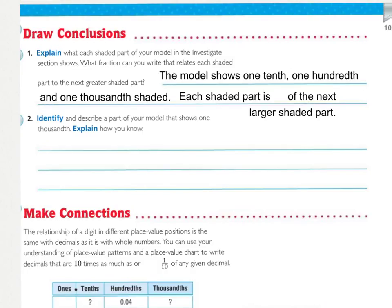The model shows one-tenth, the first rectangle that we shaded, one one-hundredth, one square, and one one-thousandth, this little rectangle within the hundredth square. And each shaded part is blank of the next larger shaded part. What fraction can you use? Well, every time we went to color something, we created how many more rows or columns? Ten. So, we can say that each shaded part is one-tenth of the next larger shaded part.